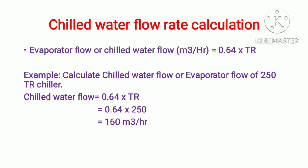First we will learn how to calculate the evaporator flow rate, or chilled water flow rate. The value in meter cube per hour is equal to 0.64 into TR. This is the thumb rule. By using this thumb rule we can calculate the chilled water flow rate in few seconds. We will calculate by taking one example — suppose we have a chiller of 50 TR, and we want to calculate the chilled water flow rate using this thumb rule formula.